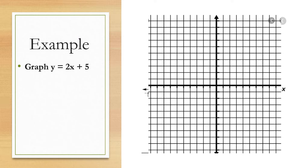Let's begin with an example. Suppose we want to graph y = 2x + 5. This equation has already been solved for y, so we're ready to start by making a table of values. Recall that we should use three values. You are free to select any x value you want — it's a good idea to select a positive x value, a negative x value, and 0.